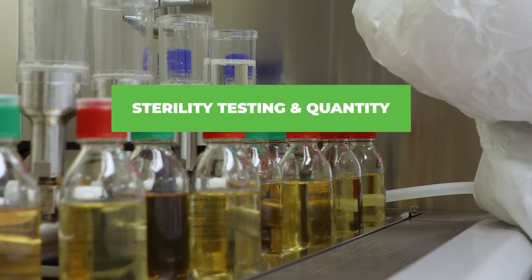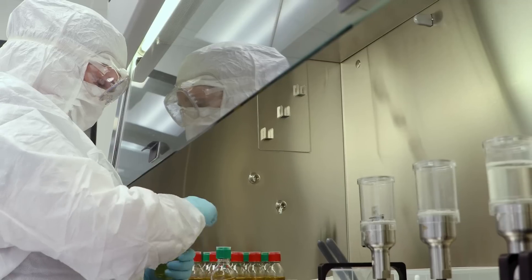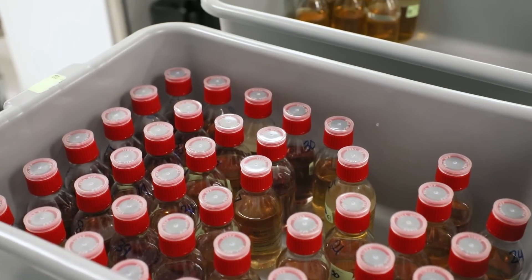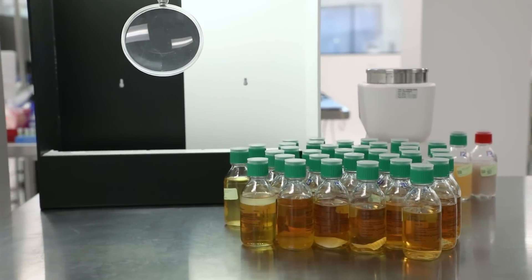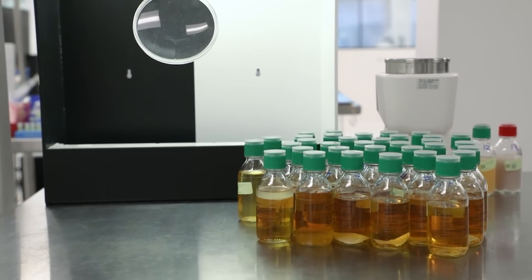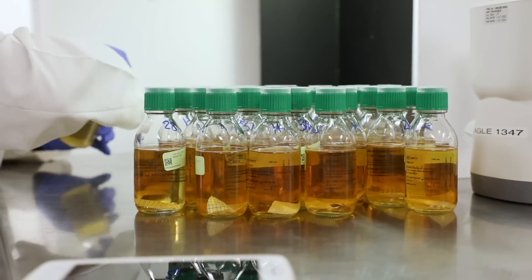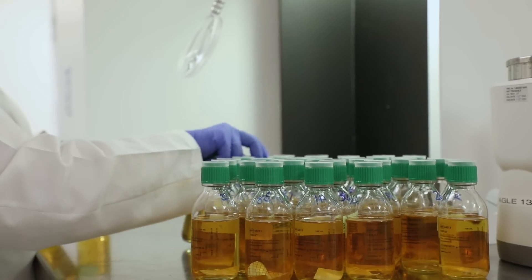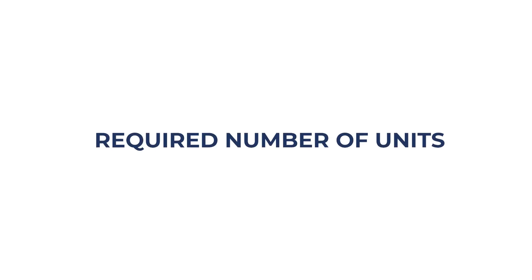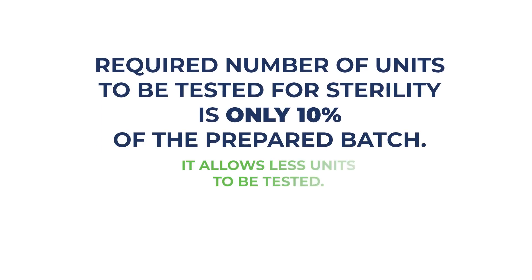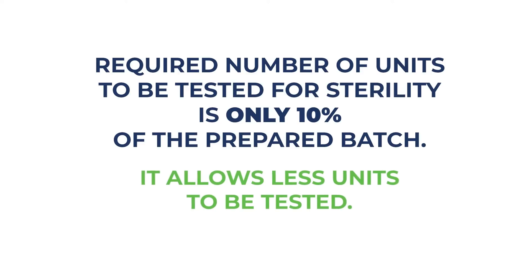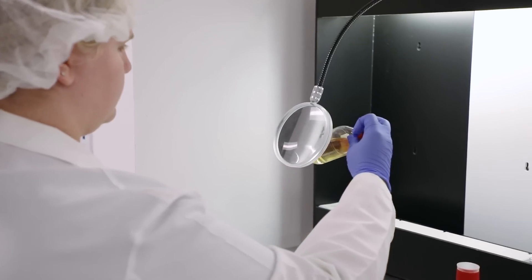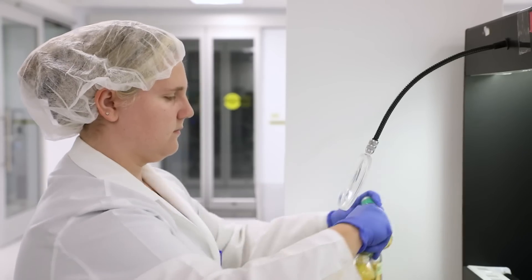The latest version of USP 797 has clarified the number of units to undergo sterility testing of batches less than 40. Unlike the previous version that referred to USP 71, which had a minimum requirement of four units for sterility testing regardless of batch size, revisions to the chapter require that only 10 percent of the units prepared, rounded to the nearest whole number, be tested for sterility. In practice, this means a smaller number of units to be tested.